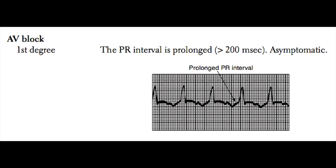Next, we will discuss atrioventricular block. These are conditions commonly tested on USMLE Step 1, so it's very important that you recognize them. First degree AV block is caused by some type of benign process that prevents the signal from the atrium from traveling to the ventricle within the normal amount of time. To diagnose first degree AV block, look for the interval between the P wave and the QRS. If the beginning of the P wave to the beginning of the QRS complex is greater than 200 milliseconds — or one large block on the EKG — that denotes first degree AV block. First degree AV block is benign, asymptomatic, and does not need to be treated.